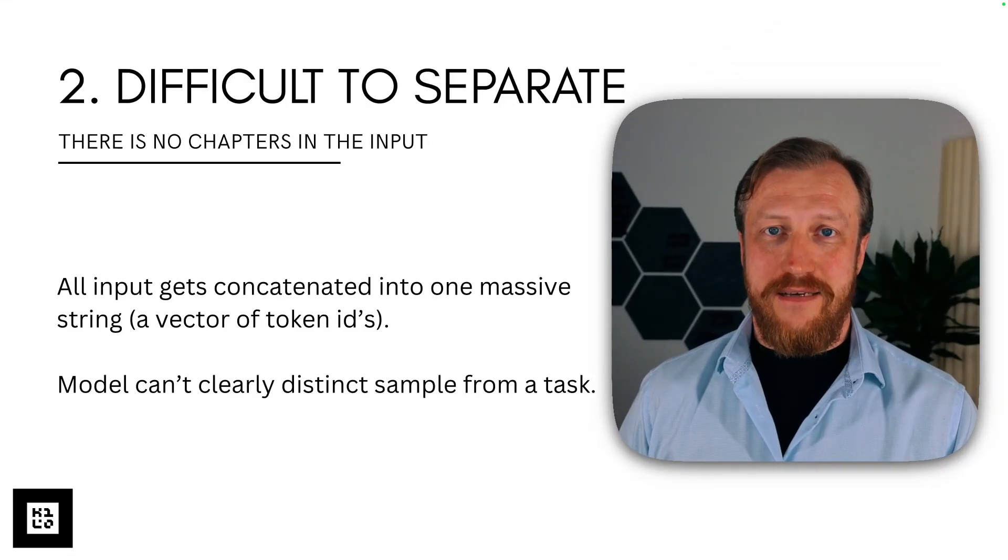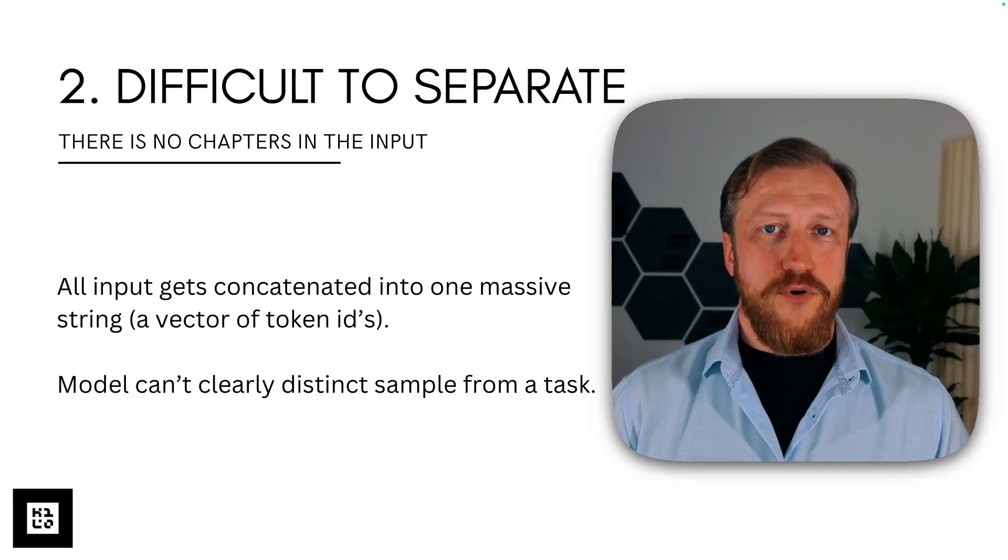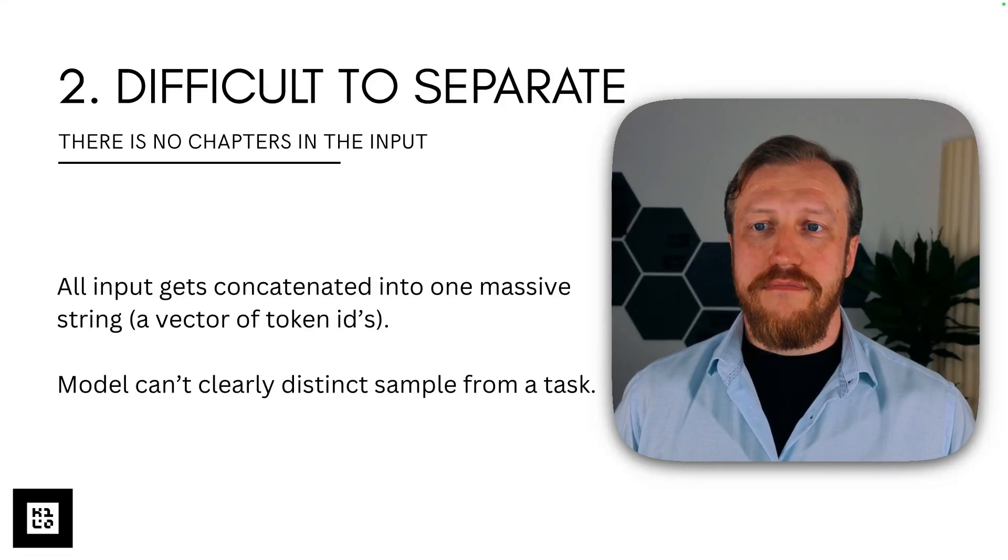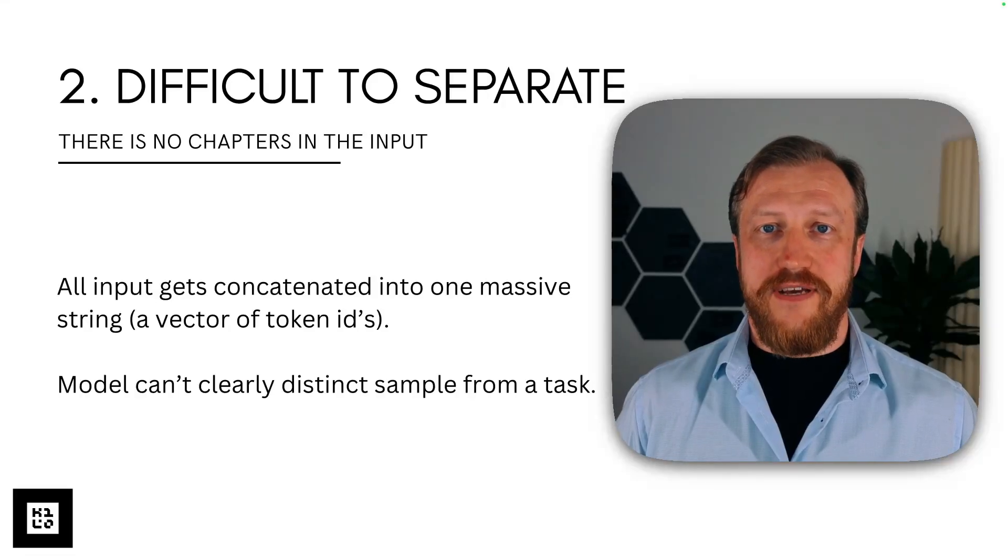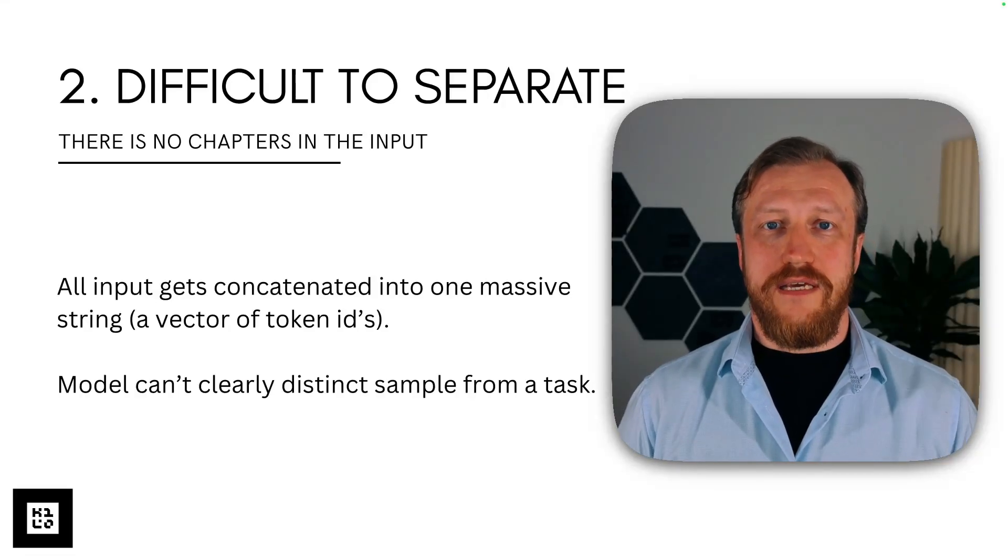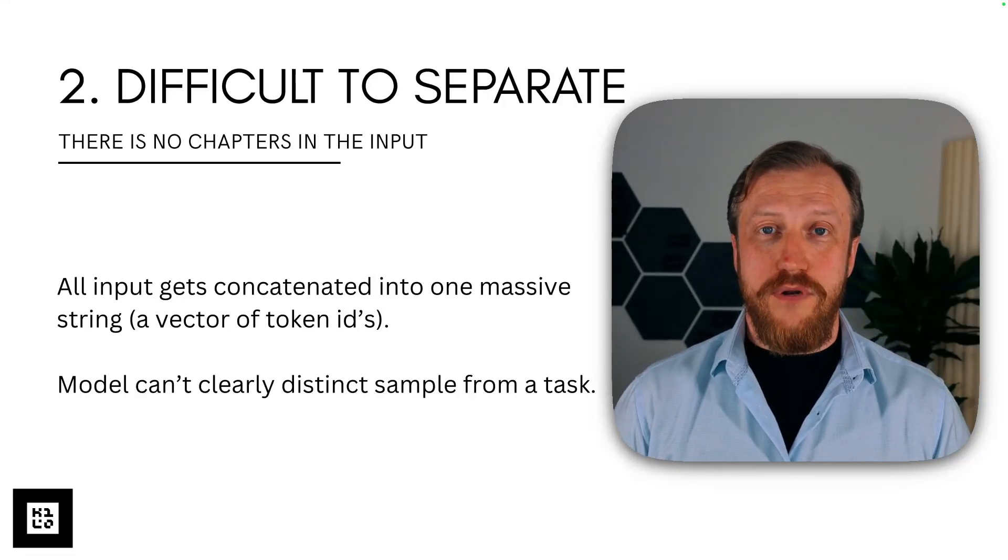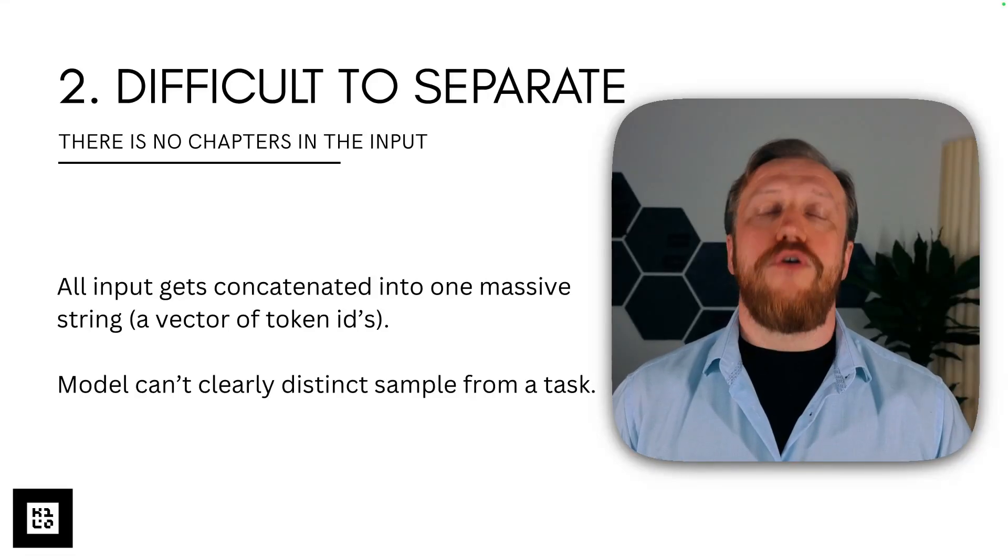Now second thing. The data that goes to the model, the input, it gets concatenated into one massive vector of token IDs. So we can say for simplicity like in a very long string.